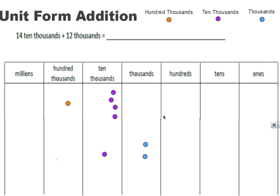Now I just need to count up how many I have in each column. How many hundred thousands do I have? One. How many ten thousands do I have? Let's count them: one, two, three, four, five — I have five ten-thousands. How many thousands do I have? Two. Do I have any hundreds? No. There are no chips in the tens place and no chips in the ones place. So if I were to write this answer in unit form, I would put one hundred thousand, five ten-thousands, two thousands. And if I'm going to write this number in standard form, it would be one hundred fifty-two thousand.